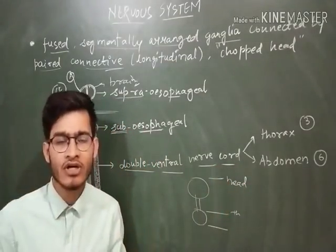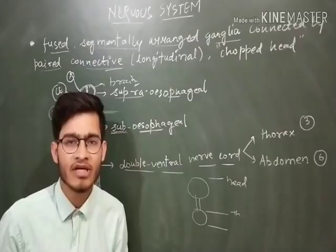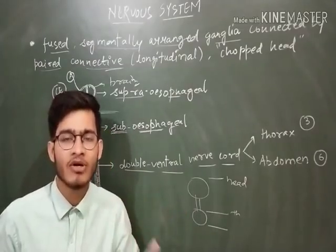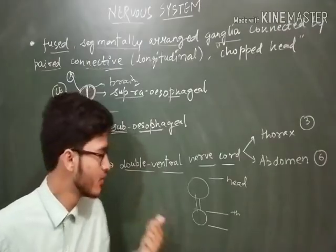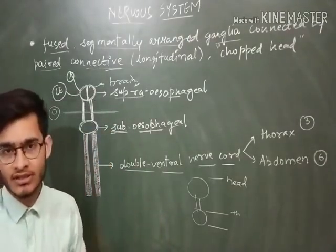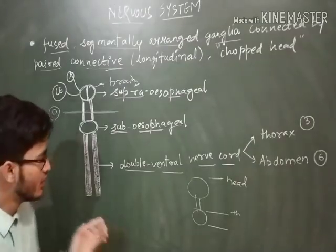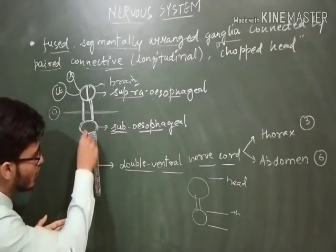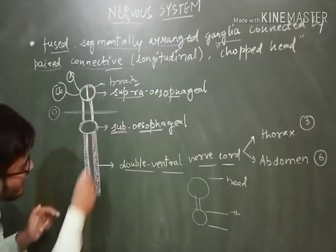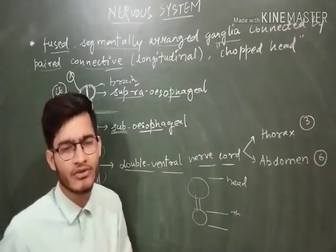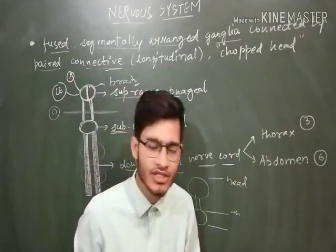In case of very complex organisms, for example, human beings, there is dorsal hollow single nerve cord. We have already talked about it in case of animal kingdom. But here, obviously, these small animals have double ventral nerve cord. So, double ventral nerve cord is also connected by the help of longitudinal connectives. There should be no confusion in that.